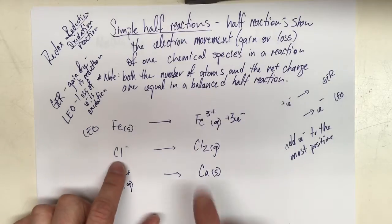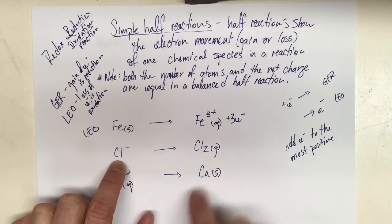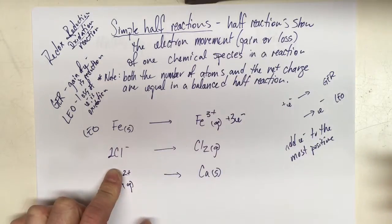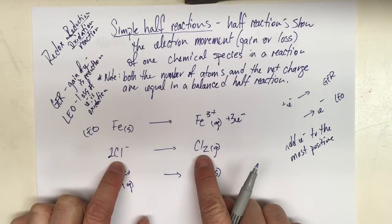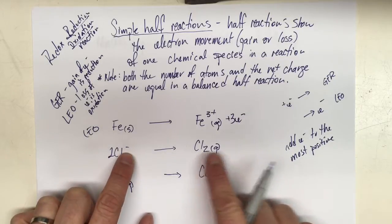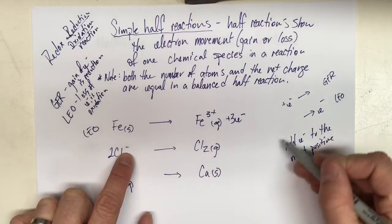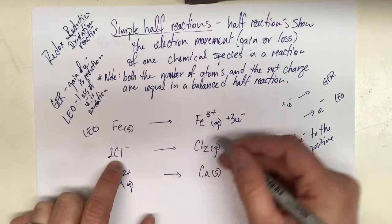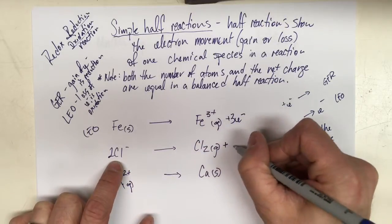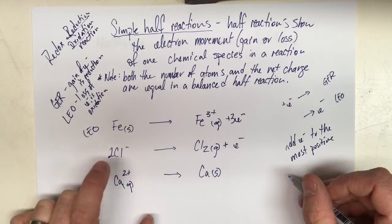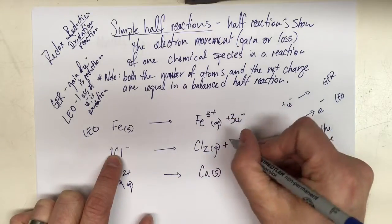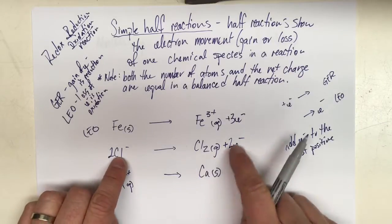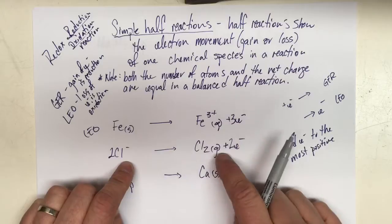The next half reaction has chloride ions becoming chlorine gas. I have to balance both atoms and charge. First I balance the atoms: now I've got two chlorine atoms on each side. But here I've got two negative on the left and zero on the right. I add electrons to the side that's more positive, which is the side with zero charge. So I add two electrons to that side, giving zero plus two negative equals two negative. These are now balanced in both number of atoms and net charge — two negative on each side.